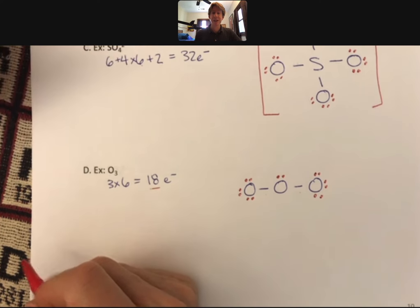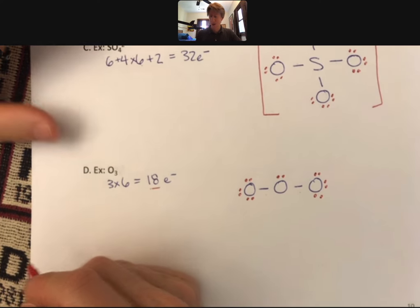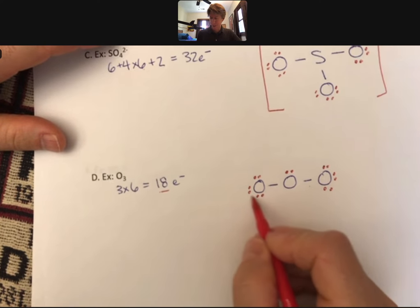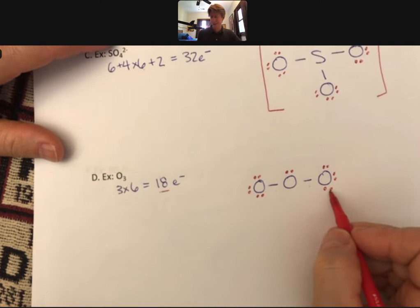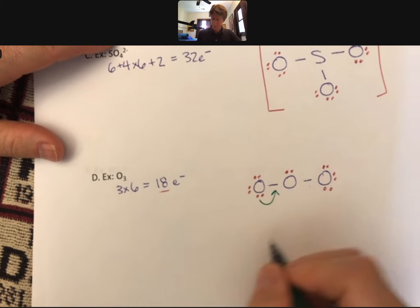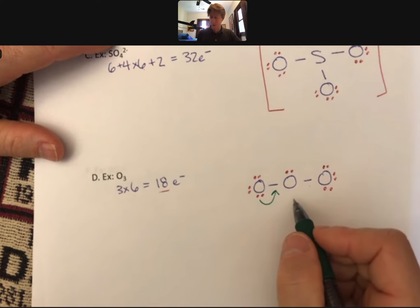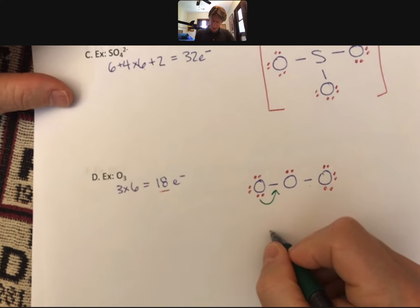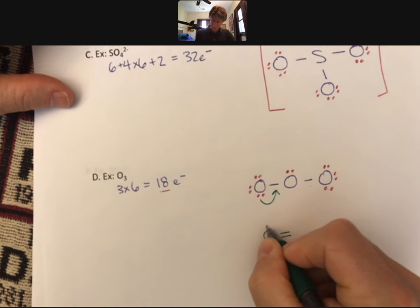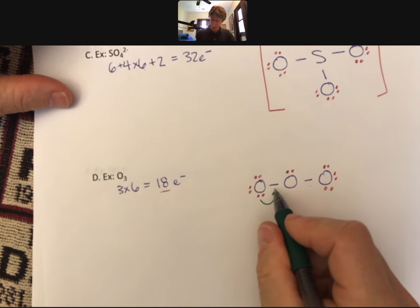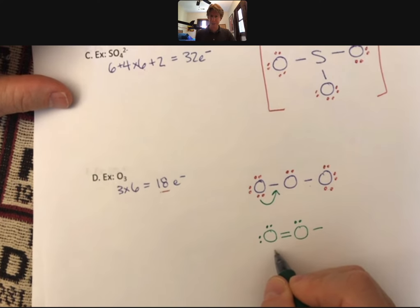And that's all I can have. Now I don't have an octet on my central oxygen. I do have octets on my outside oxygen. That means I do have to form a double bond. It doesn't matter which one you choose. Just choose to move two electrons over to get your final answer. And I always like to put all my electrons back in the same place. So I'm going to take these two and move them over and leave that spot blank.